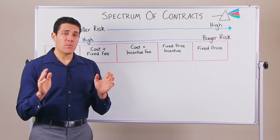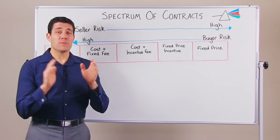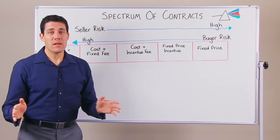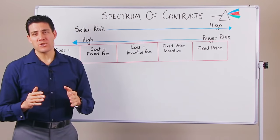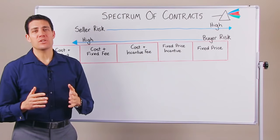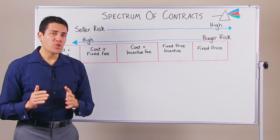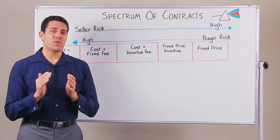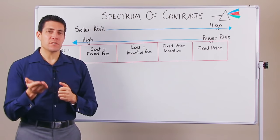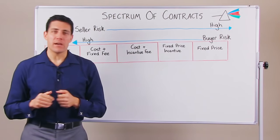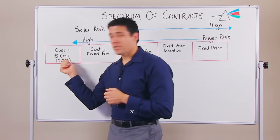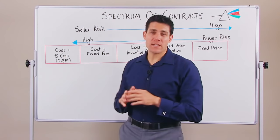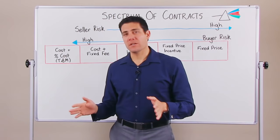The first one we'll start out with is unfortunately the most prevalent out there in the IT industry and in construction, and it also presents the highest risk to you as a buyer — and that's the cost plus percentage of cost, otherwise known as time and materials.